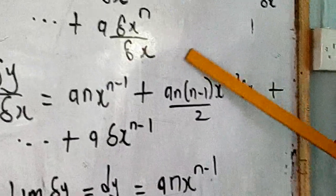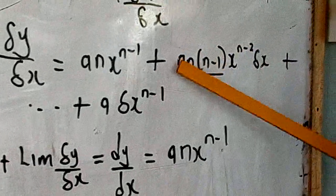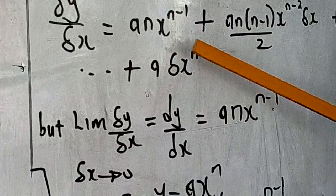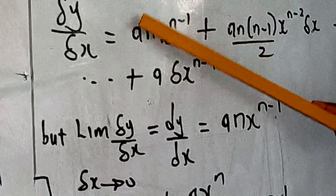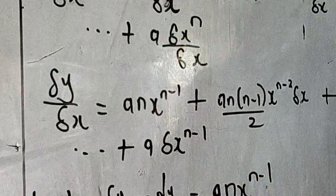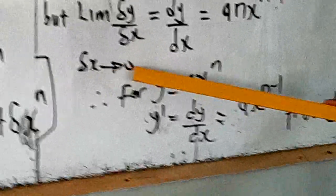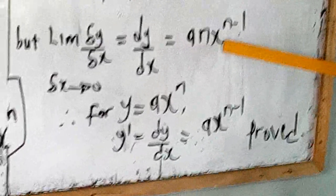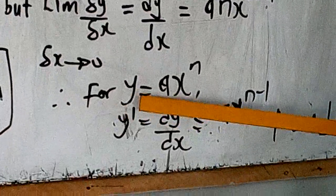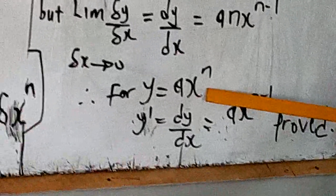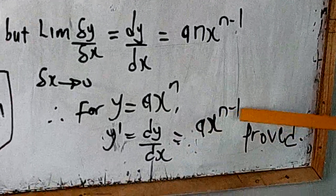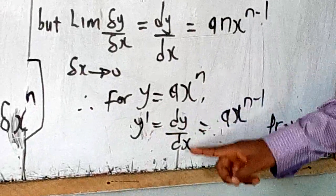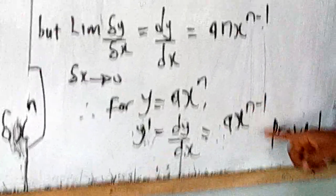Now we find the limit of delta y over delta x as delta x tends to 0. Each term still containing delta x tends towards 0. But since the first term — an·x^(n−1) — does not contain delta x, it remains as it is. So the limit of delta y over delta x as delta x tends to 0 equals an·x^(n−1). Therefore, for y equals ax^n, dy/dx equals an·x^(n−1). What this tells us is: to find y prime, multiply by the power and reduce the power by one. This is the proof.